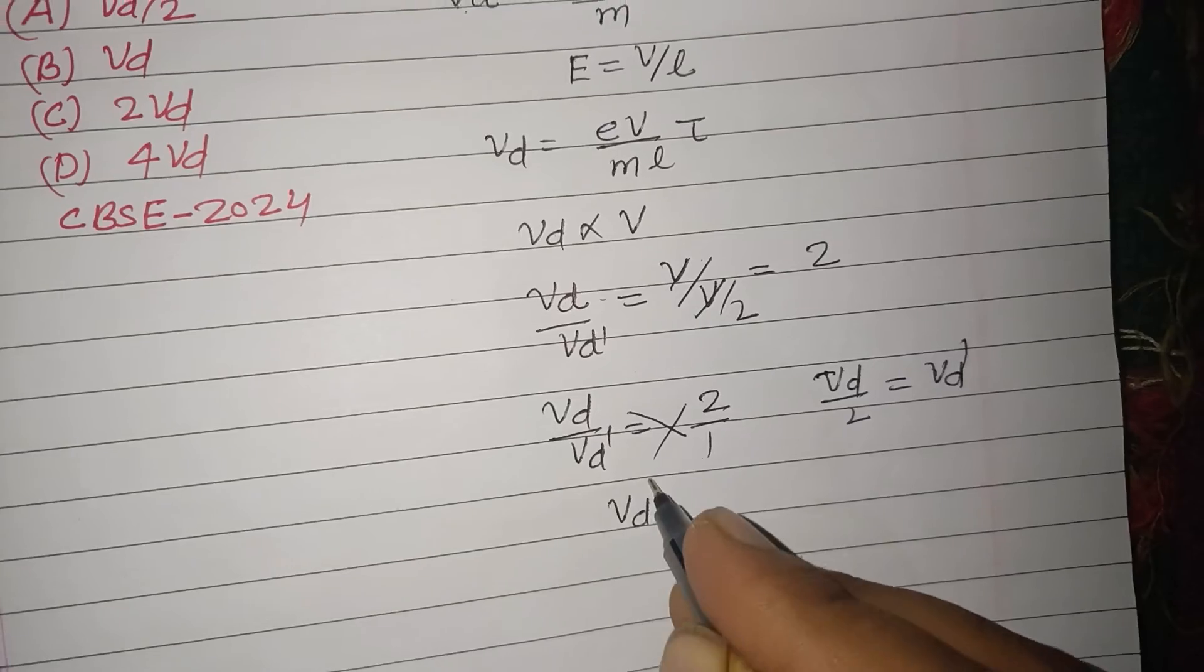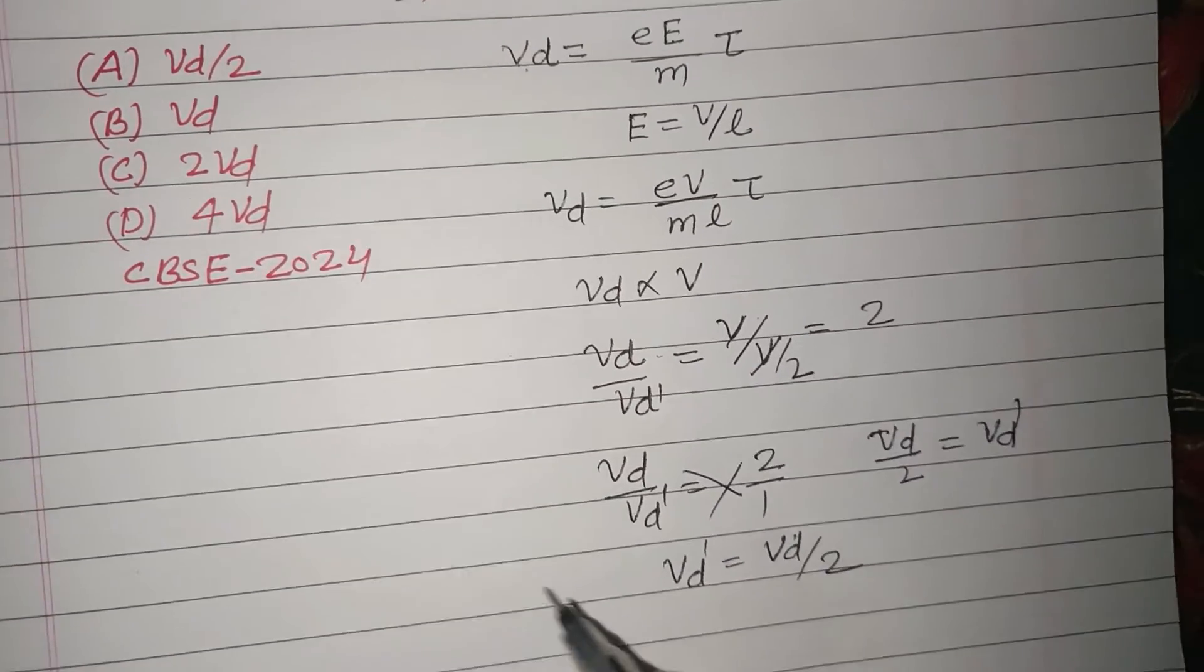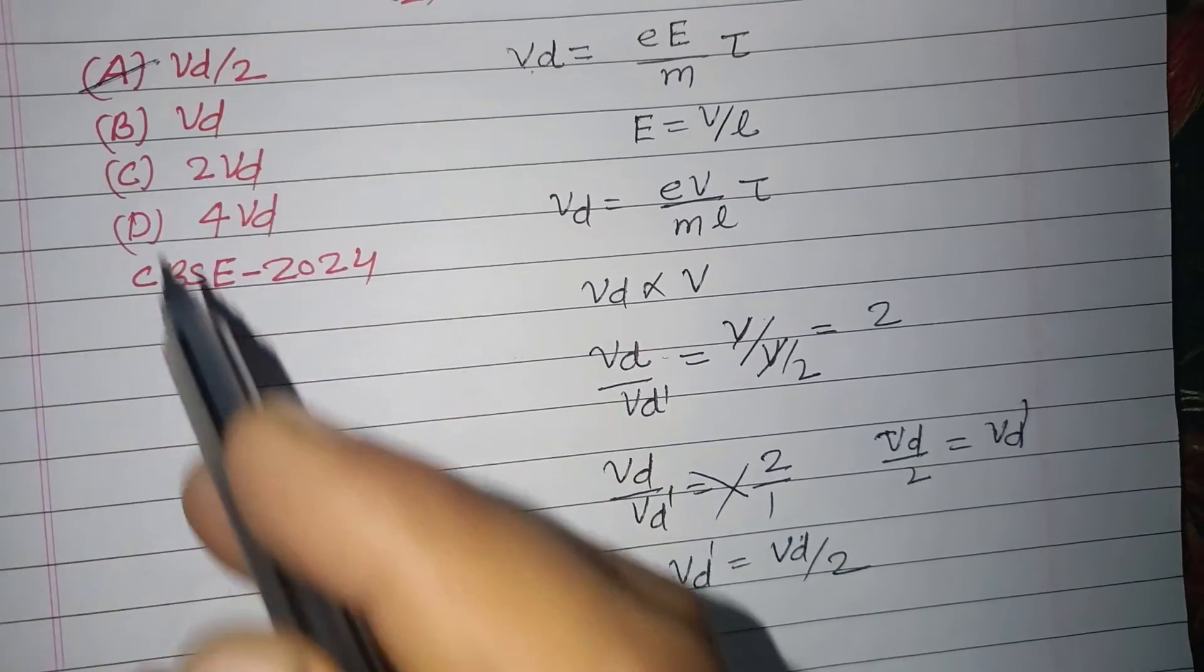So drift velocity becomes half of initial drift velocity. In this case A is the correct answer of this question.